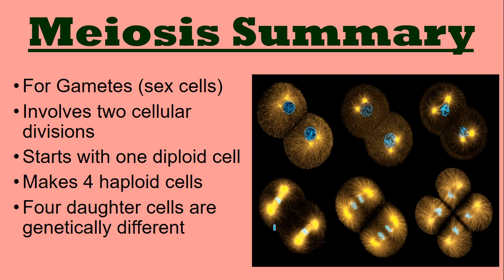Meiosis summary: it's for gametes only — it only happens in sex cells, not in somatic cells. It involves two cellular divisions, unlike mitosis which divides only once. You start with one diploid cell and produce four haploid cells. The four daughter cells are genetically different from each other and from the parent.